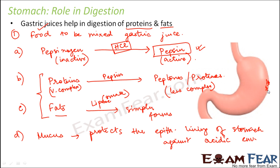Once the epithelial cells are damaged, digestion cannot happen. So the stomach must be protected from the acidic environment while still needing HCl for digestion. This is also why sphincters are present on both ends of the stomach — to keep it isolated from the esophagus as well as the small intestine, because the highly acidic environment inside can harm neighboring organs.